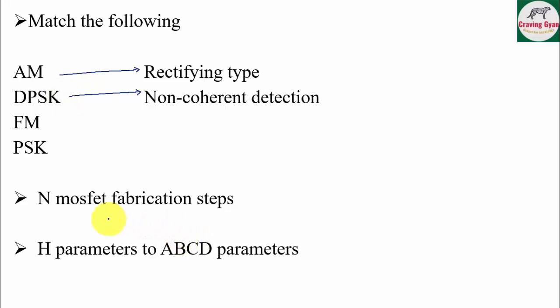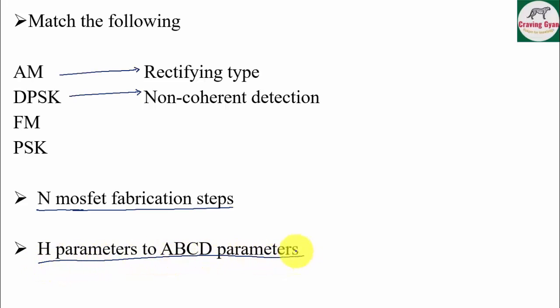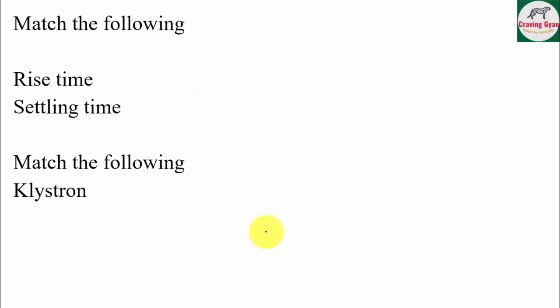NMOS fabrication steps were asked — this topic was already covered including NMOS, PMOS, and CMOS fabrication. In the case of CMOS, you have P-well, N-well, and Twin-tub process. In Twin-tub, an epitaxial layer is used. H parameters to T parameters conversion was also asked — T parameters are also referred to as transmission parameters (ABCD parameters).